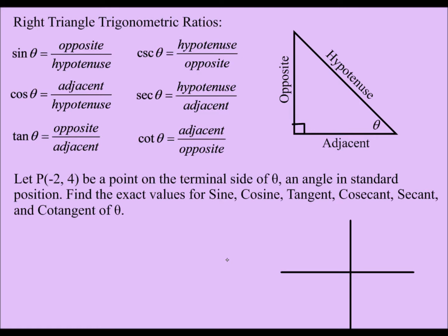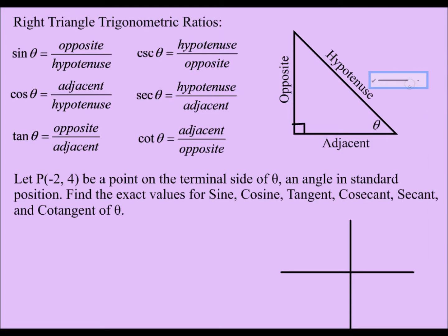Theta is just an arbitrary angle that we're going to use. First, I need to plot (-2, 4). Since x is negative and y is positive, that tells me I'm in the second quadrant. I'll draw my reference triangle in the second quadrant — that's my terminal side. X is negative 2, y is 4, and theta is always located between the x-axis and the terminal side at the origin.